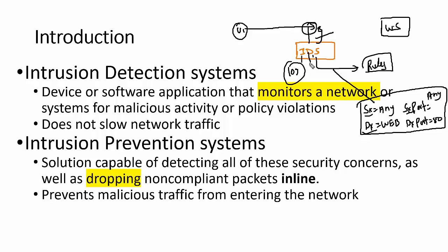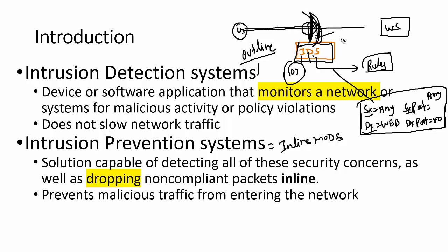In the case of IPS, it will block and drop that traffic. IPS operates in inline mode — if traffic from a user to the web server doesn't meet IPS rules, it is blocked before reaching the server. IDS remains passive in outline mode, allowing traffic through but logging it. This is why IPS slows down network performance while IDS does not.